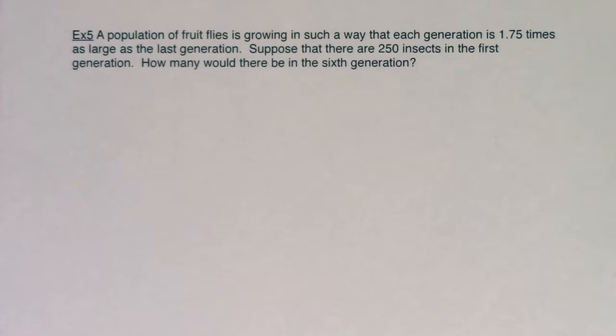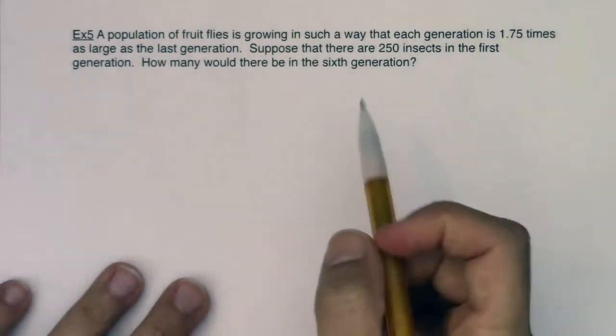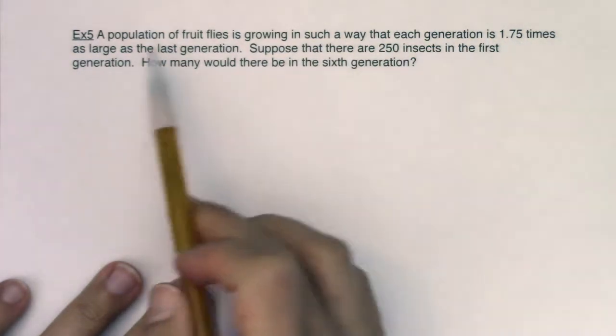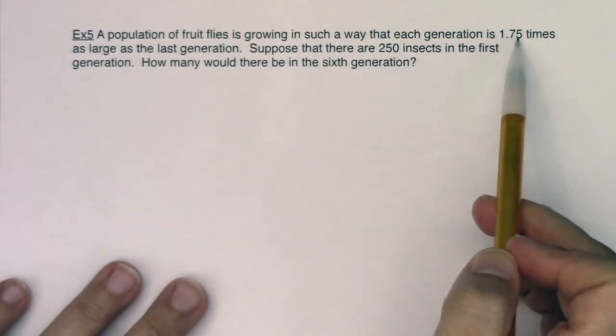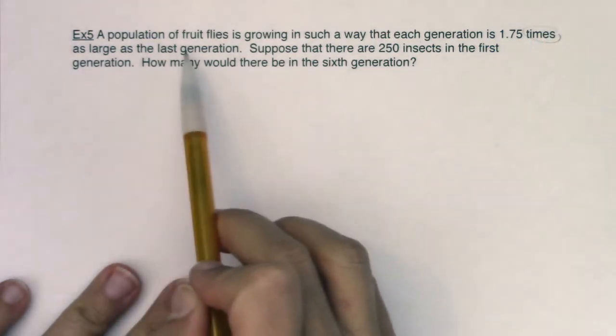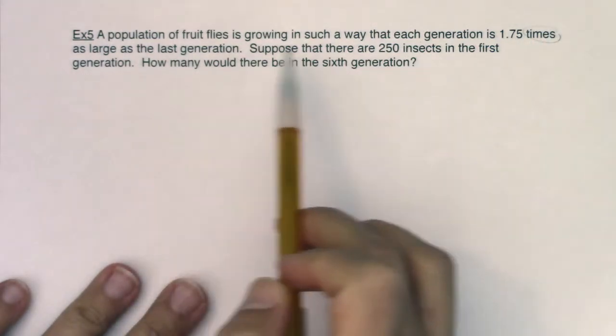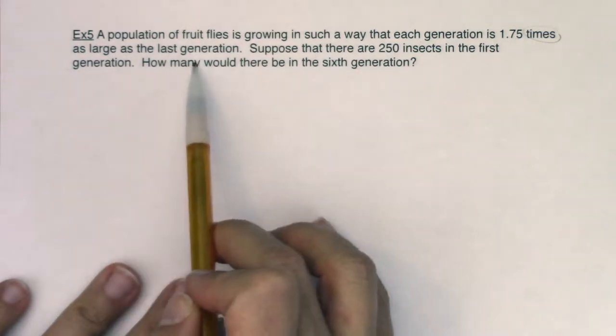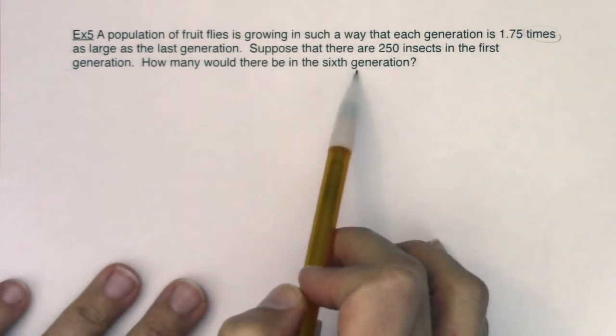Hey Math 31, let's take a look at example 5. A population of fruit flies is growing in such a way that each generation is 1.75 times as large as the last generation. Suppose that there are 250 insects in the first generation, how many would there be in the sixth generation?